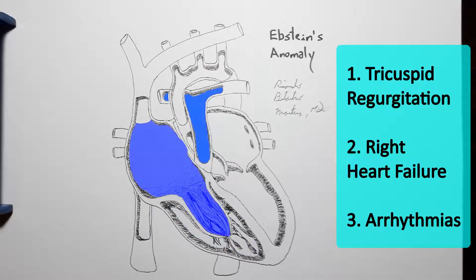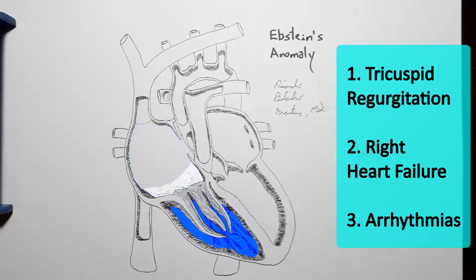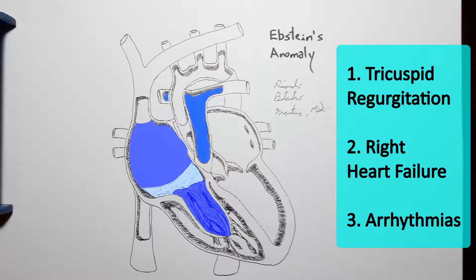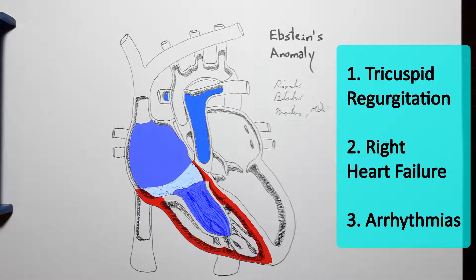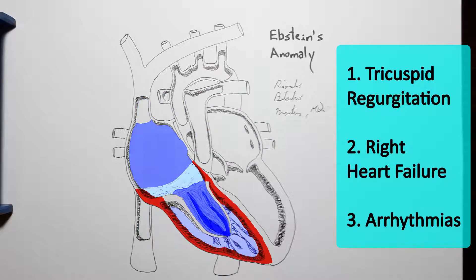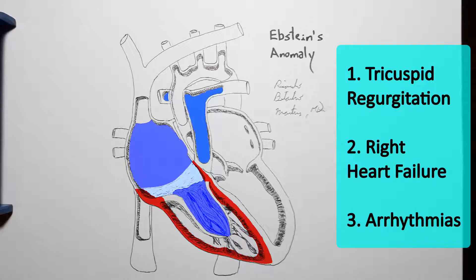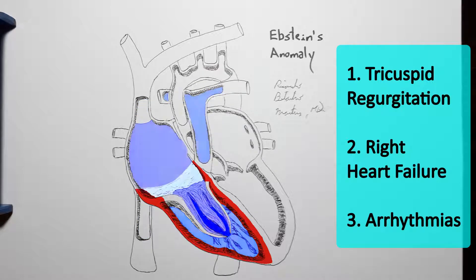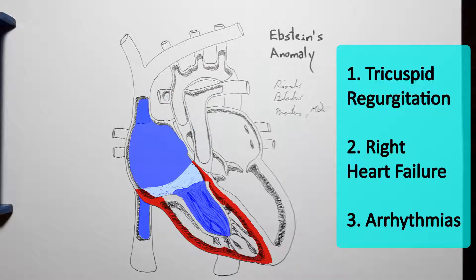This is made worse by the atrialized portion of the right ventricle, which is surrounding the right atrium but will contract along with the rest of the right ventricle. Meaning that during ventricular systole, it will also contract around the atrium, further pushing blood upwards and upstream, in the opposite direction it should normally flow.